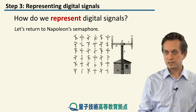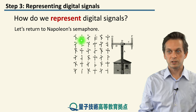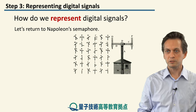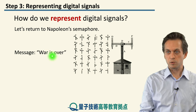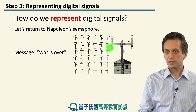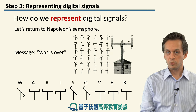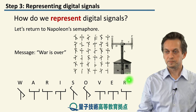We saw an example of a digital system with the Napoleon semaphore. Let's go back to it and consider it again. In order to send a message — let's say 'war is over' — the arms have to be rearranged into the following configurations. For W we have this one, for A this one, for R this one, and so on.